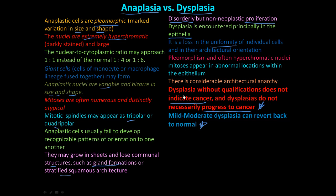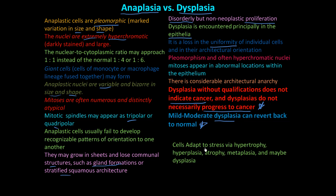Dysplasia can be what they call pre-malignant, where cells will develop into cancers. But just because there is dysplasia, that doesn't mean there is cancer or that it will progress to cancer. It can, but it doesn't always necessarily mean that. If you see mild to moderate dysplasia, it can revert back to normal, because cells adapt to stress.